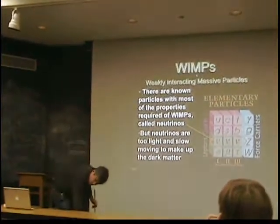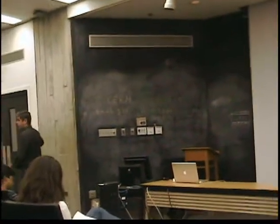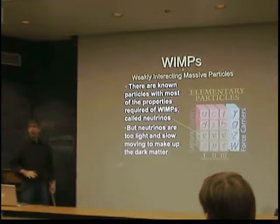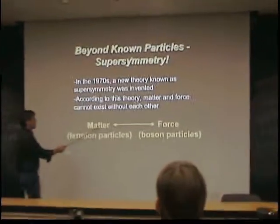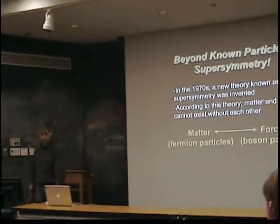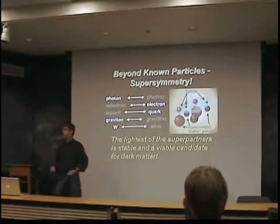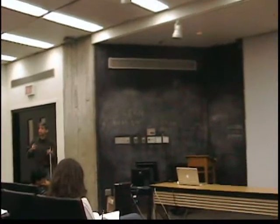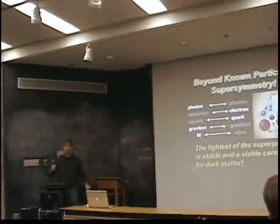If there were no photons in the universe, I could take my hand and push it right through this table effortlessly, because there wouldn't be any repulsion between the atoms in my hand and the atoms in that table — there would be no electromagnetic force. Because of the photon, it repels and stops. So the idea behind supersymmetry is that fermion particles and boson particles have to exist in pairs. For every fermion there's a boson, and for every boson there's a fermion. So for the photon, which is a boson, there must also exist a fermion that's a lot like it but matter instead of force — we call that a photino. Similarly, the electron has to have a selectron. All of the various particles have to have a superpartner, or supersymmetric particle.